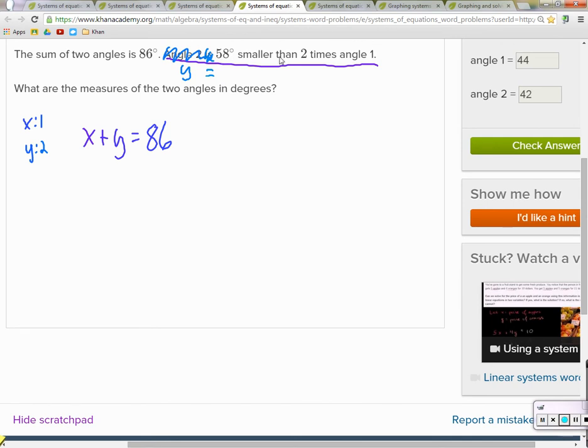So 58 smaller than means subtract 58 from something. From what? From two times angle one. Subtract 58 from two times X.